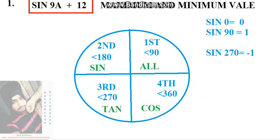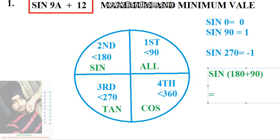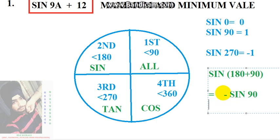For sin(270), I can write it as sin(180 + 90). This means I am dealing with the third quadrant, where only tan is positive. Since I am adding to 180, the T-ratio does not change — so it becomes sin(90), which equals 1. But since sin is negative in the third quadrant, sin(270) equals minus 1.